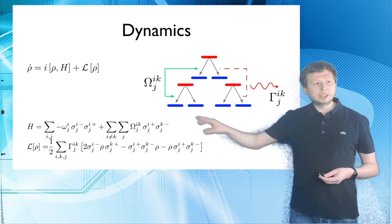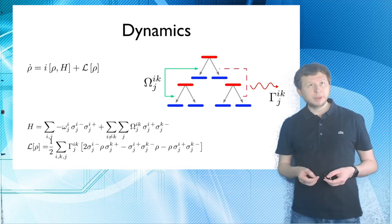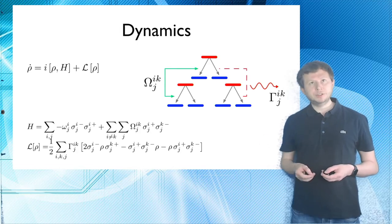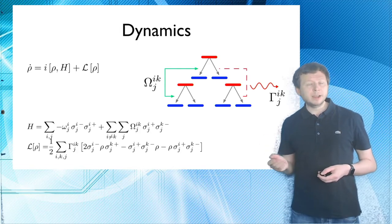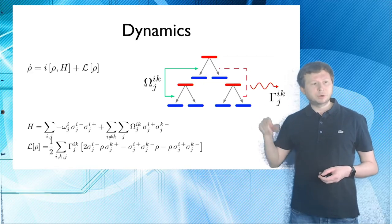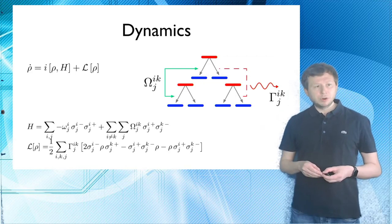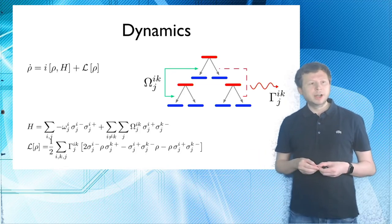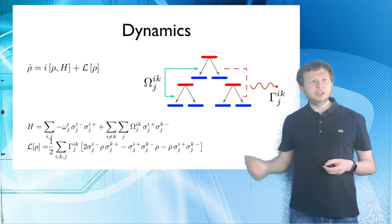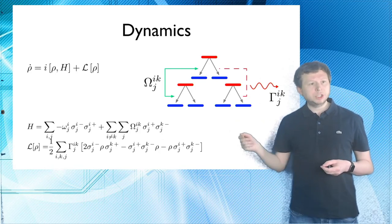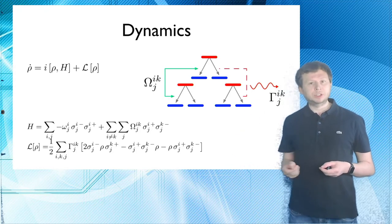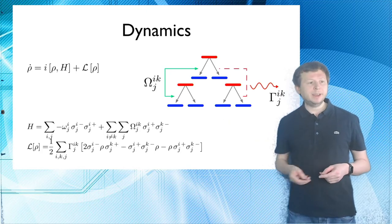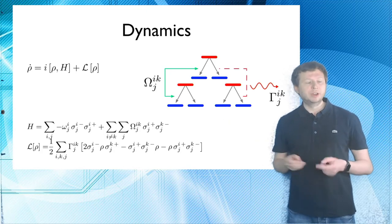And the Hamiltonian, of course, has two parts. One is the bare atomic energy. So for each atom and for each transition, so the atoms are denoted by I and the transitions are denoted by J, we have sort of the bare atomic energy. And also we have this energy exchange, dipole-dipole interaction, cross-talk between the atoms. But for each individual transition. So the transitions in the atoms do not talk to each other, but each transition in each atom talks to all the same transitions in the other atoms. So we have this sum over IK here for the atoms and the sum over J for the transition.